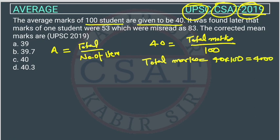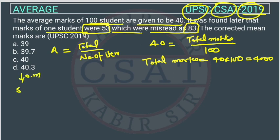It was found later that the marks of one student were 53, which were misread as 83. So there was one student whose original marks were 53, but the average was calculated using the incorrect value of 83.